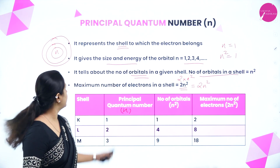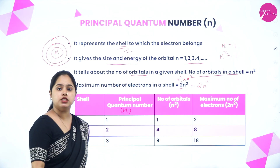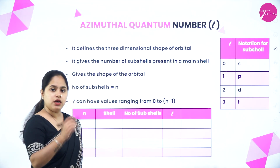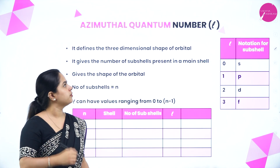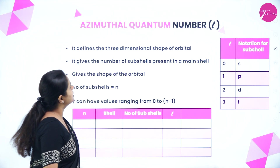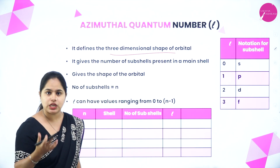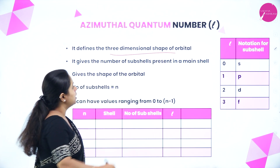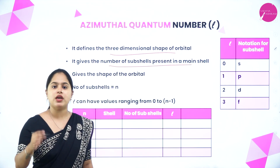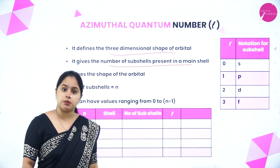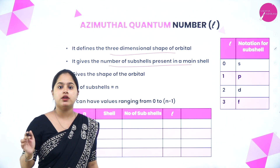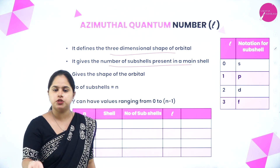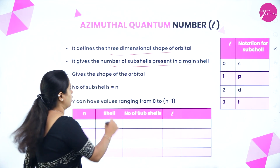Moving on to the azimuthal quantum number, represented by small l. It defines the three-dimensional shape of the orbital and gives the number of subshells present in a main shell. The l value equals the number of subshells in a shell. The principal quantum number tells the shell; the azimuthal quantum number tells the subshell and the shape of the orbital.